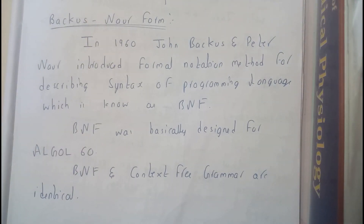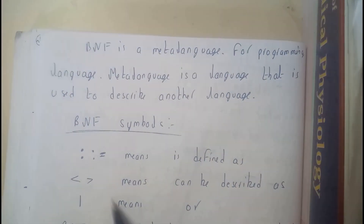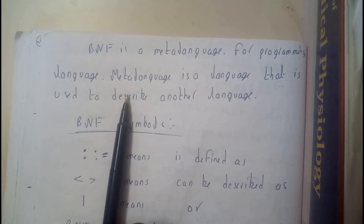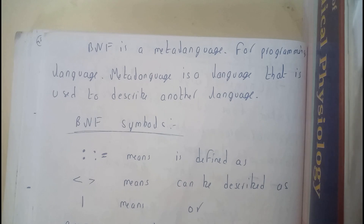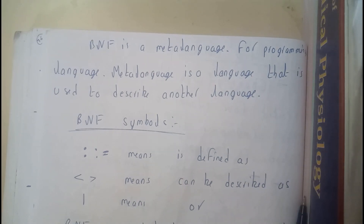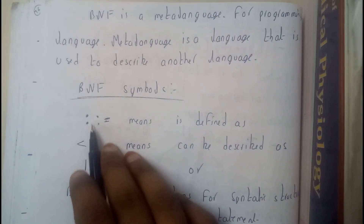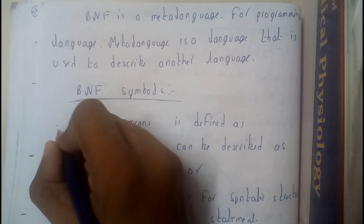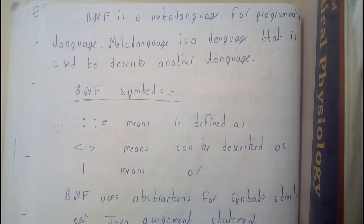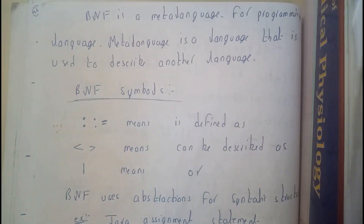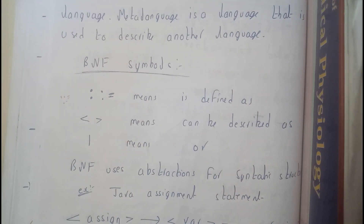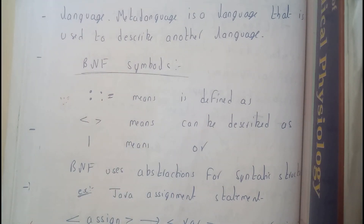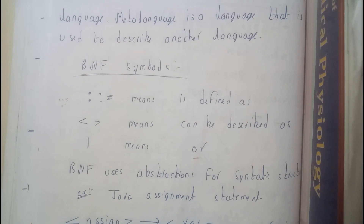We can even say BNF and context-free grammar are similar. Once we go through the examples you'll have a clear idea. BNF is a meta-language for programming languages. A meta-language is a language used to describe another language. One of the few important symbols in BNF is the scope resolution operator with equals, which is our definition operation. BNF uses a double colon with equals, meaning "is defined as." We'll be using this symbol throughout.